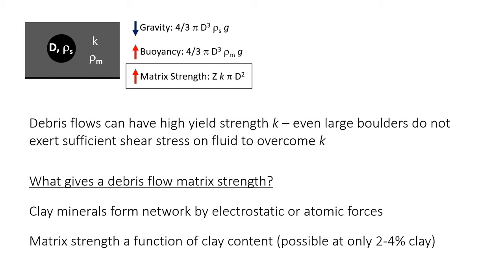Matrix strength is the primary sediment support mechanism in debris flows and is related to the yield strength of the flow. Debris flows can have very large yield strengths — even to the point where the weight of a large boulder doesn't create enough shear stress to sink through the sediment-water matrix. This is largely related to the mud or clay content of the matrix. Clay minerals supported in the sediment-water mixture can form a strong network because of electrostatic or atomic forces, even with only a small amount of clay — even just a couple percent clay can give debris flows substantial matrix strength. This is the key difference between debris flows and other types of sediment gravity flows.